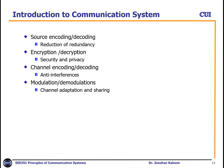In summary: source encoding reduces the redundancy of data; encryption improves security and privacy; channel encoding helps avoid interference; and modulation and demodulation are helpful in channel adaptation and shaping. These are the key blocks in a communication system with their working summary.